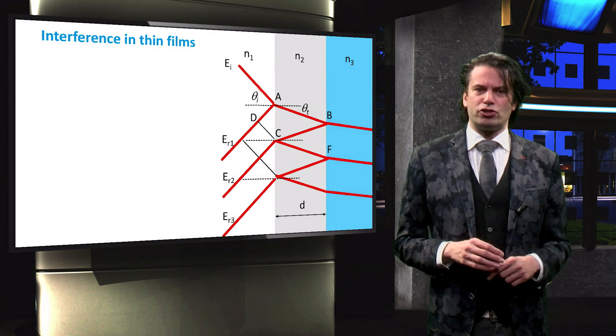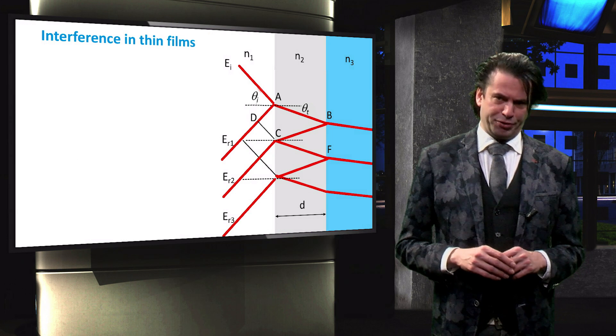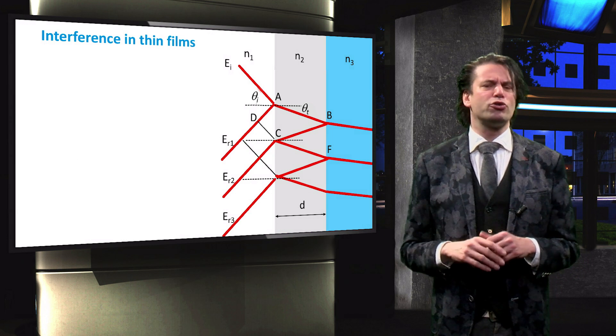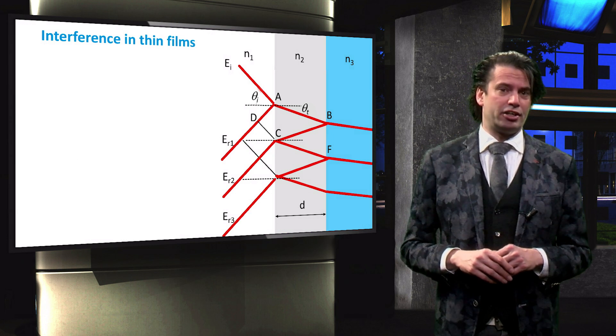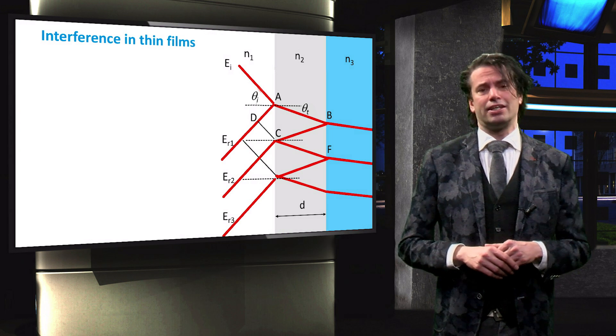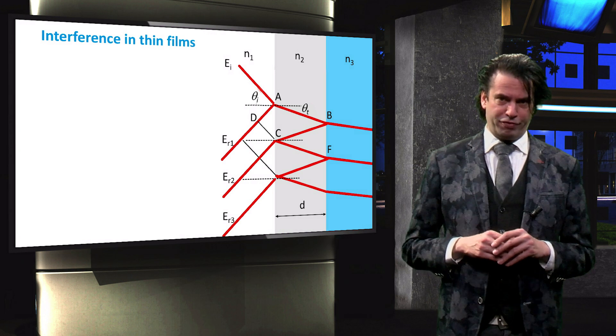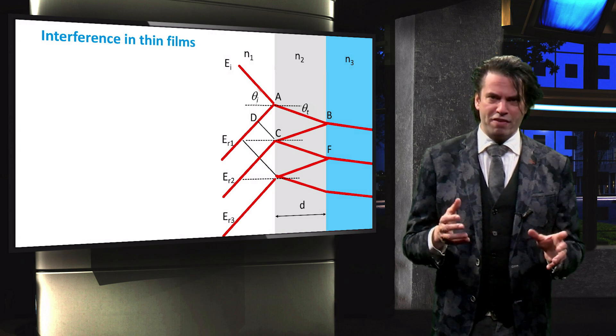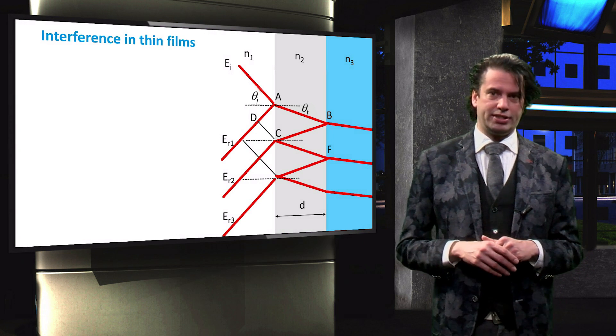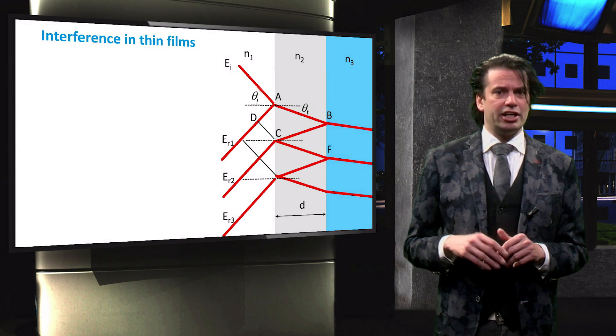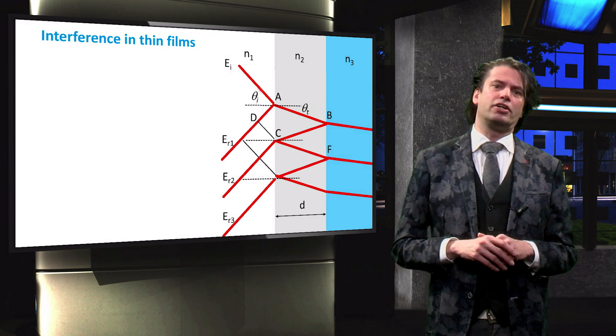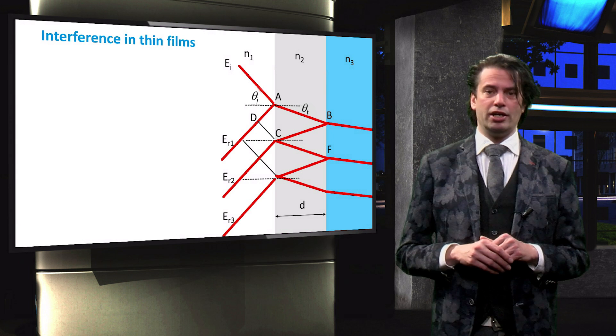The different layers in a solar cell can cause interference. This figure shows a cross-section of the air, Rayleigh film and silicon. EI represents the electric field of an electromagnetic wave incident under an angle θi. ER1 through 3 are the reflections of EI.